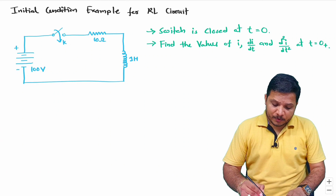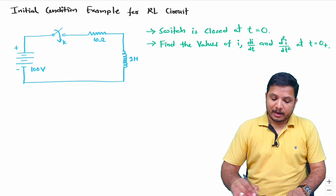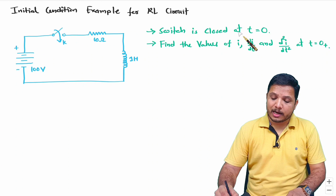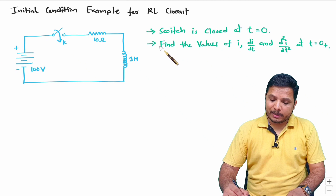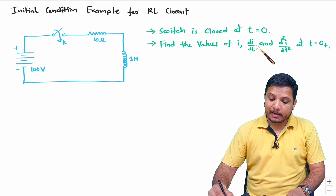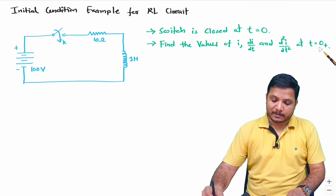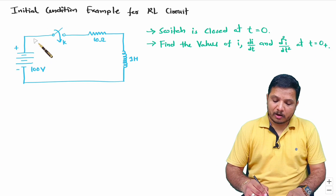We have an RL circuit where switch k is closed at time t equals 0, and we are required to find the values of current i, di/dt, and d²i/dt² at time t equals 0 plus — that is, the initial conditions of this network.